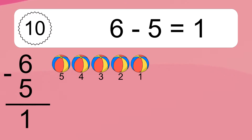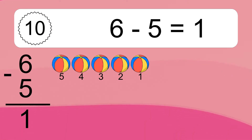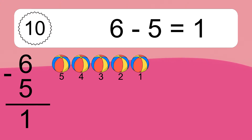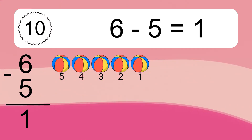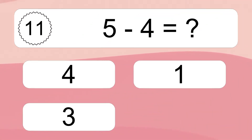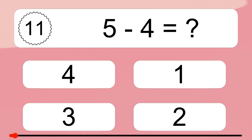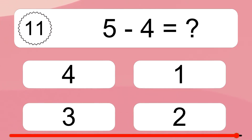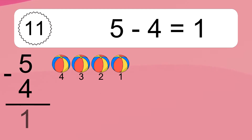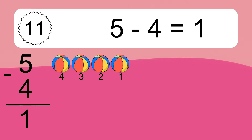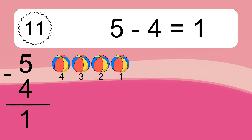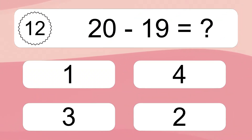6 minus 5 equals what? 6 minus 5 equals 1. Let's count it: 5, 4, 3, 2, 1. 5 minus 4 equals what? 5 minus 4 equals 1. Let's count it: 4, 3, 2, 1.